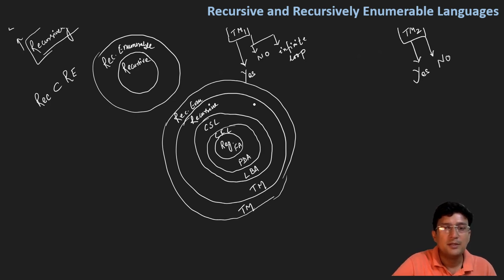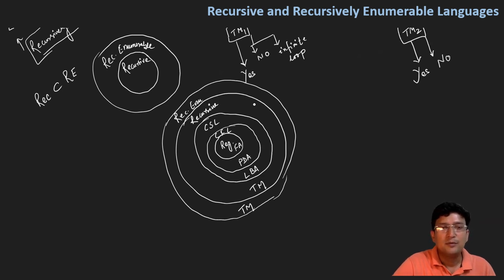We have discussed here about the recursive languages and the recursively enumerable languages. In the next lecture, we will discuss about the halting problem of the Turing machine.